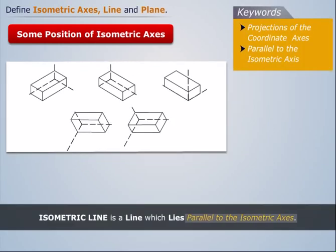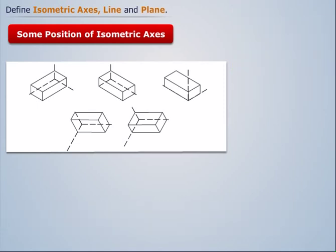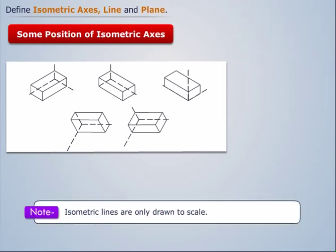Any line which is parallel to the isometric axis is termed as isometric line. Note that isometric lines are only drawn to scale.